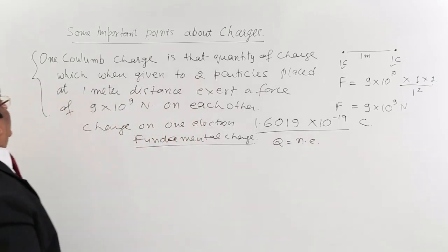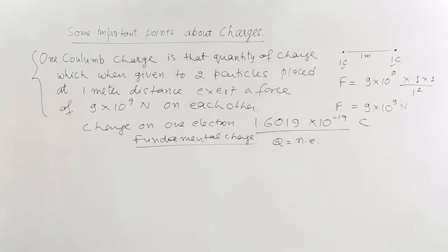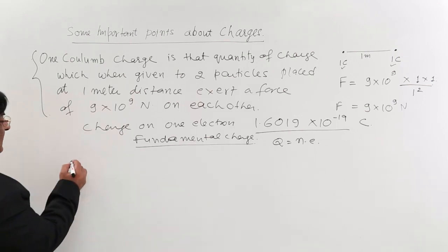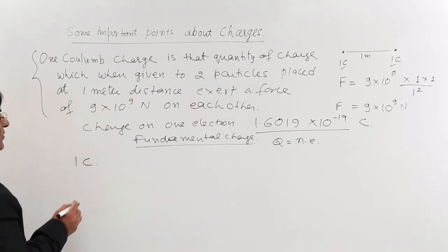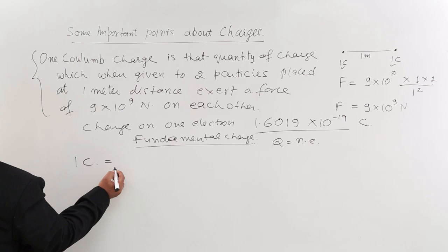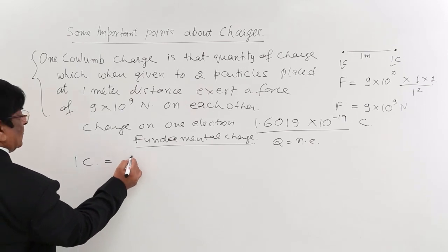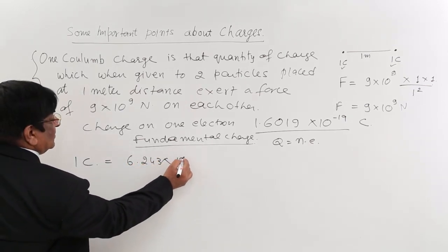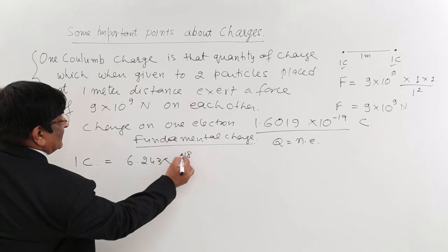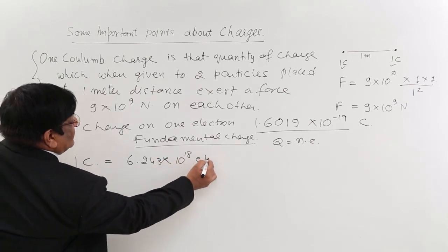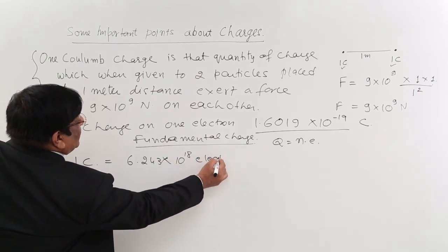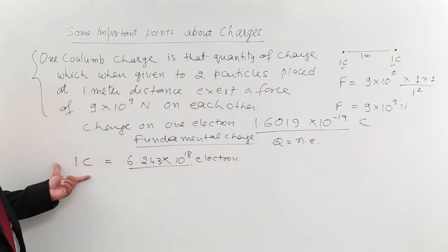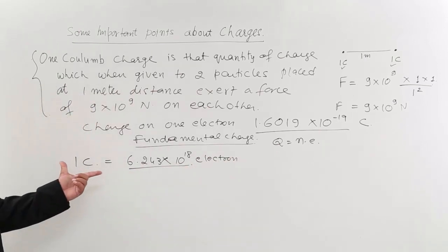The basic charge relationship is Q = Ne. If we want to create one coulomb of charge, how many electrons do we need to supply? The answer is 6.243 × 10¹⁸ electrons. That many electrons make one coulomb of charge, which shows that coulomb is a very large quantity.